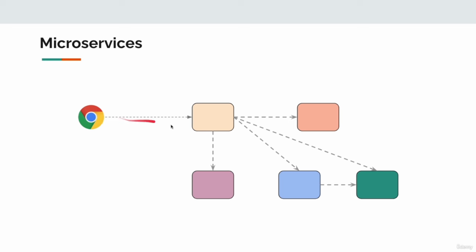That is, the user's request will be completed only if the order service receives the response from everyone. Each service has its own request-response data structure, so the order service has to be aware of that. Also, if one service is slow, this service has to wait for the response, which will affect the overall processing time. We have to worry about timeout patterns, retry patterns, etc.